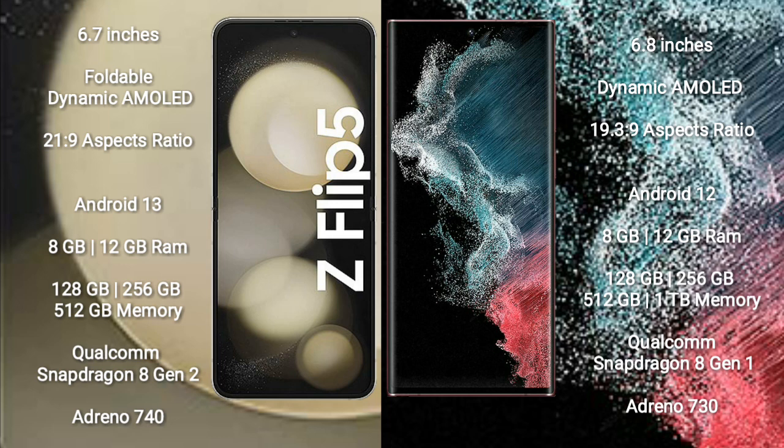The Samsung Galaxy Z Flip 5 comes with 8GB or 12GB RAM and 128GB, 256GB, or 512GB internal storage, powered by a Qualcomm Snapdragon 8 Plus Gen 2 processor with an Adreno 740 GPU. The Samsung Galaxy S22 Ultra comes with 8GB or 12GB RAM and 128GB, 256GB, 512GB, or 1TB internal storage, powered by a Qualcomm Snapdragon 8 Gen 1 processor with an Adreno 730 GPU.